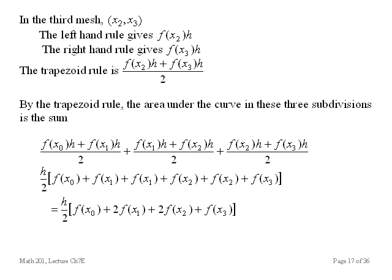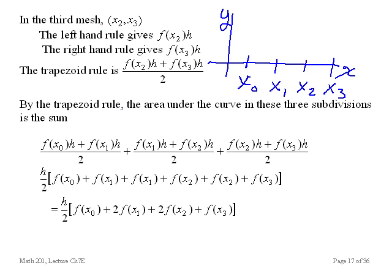So what we have here for these three meshes is x, here's y. Say this is x-naught, x1, x2, and x3. It doesn't matter what the function is doing in here, except it can't do that, of course.